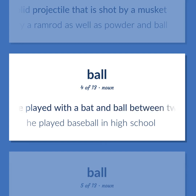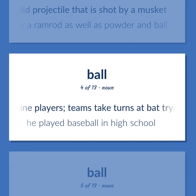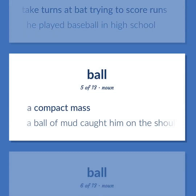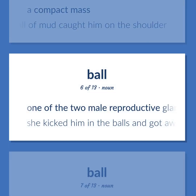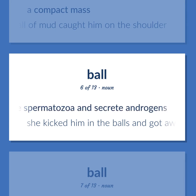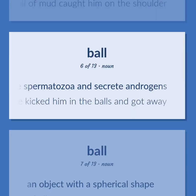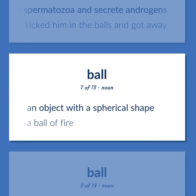Ball: A ball game played with a bat and ball between two teams of nine players; teams take turns at bat trying to score runs. Example: He played baseball in high school. A compact mass. Example: A ball of mud caught him on the shoulder. One of the two male reproductive glands that produce spermatozoa and secrete androgens. An object with a spherical shape. Example: A ball of fire.